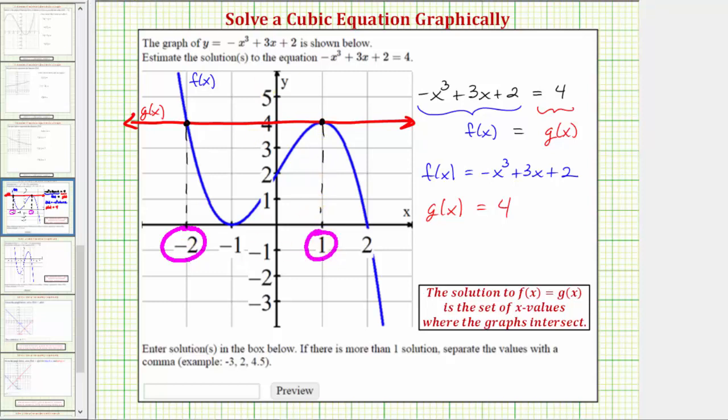So these are the two solutions, but also notice how the ordered pair for this point of intersection would be negative two comma four. The ordered pair for this point of intersection would be one comma four.